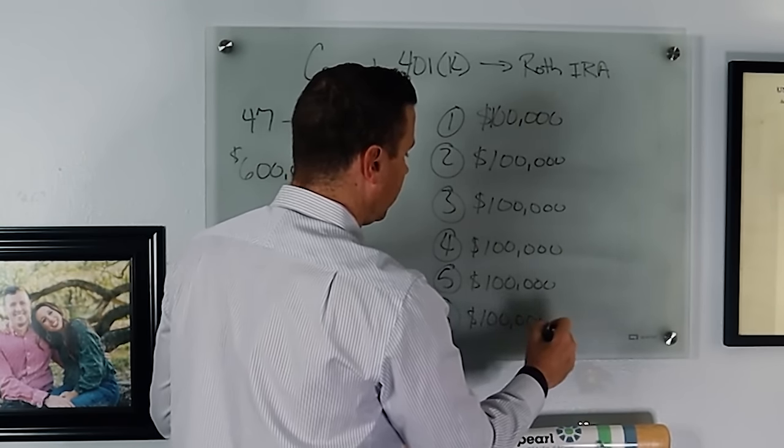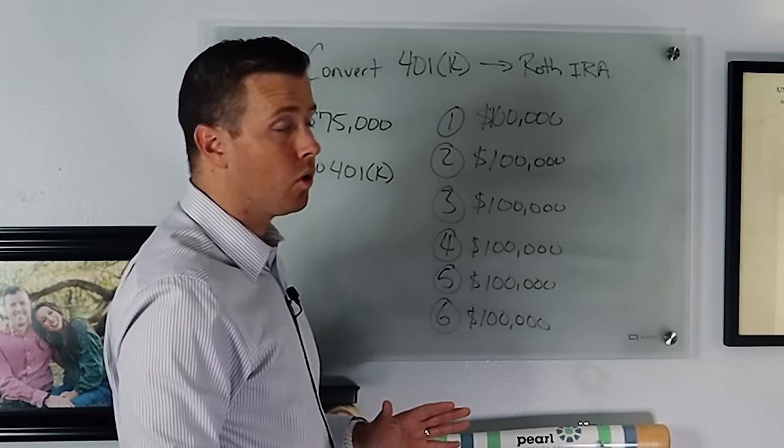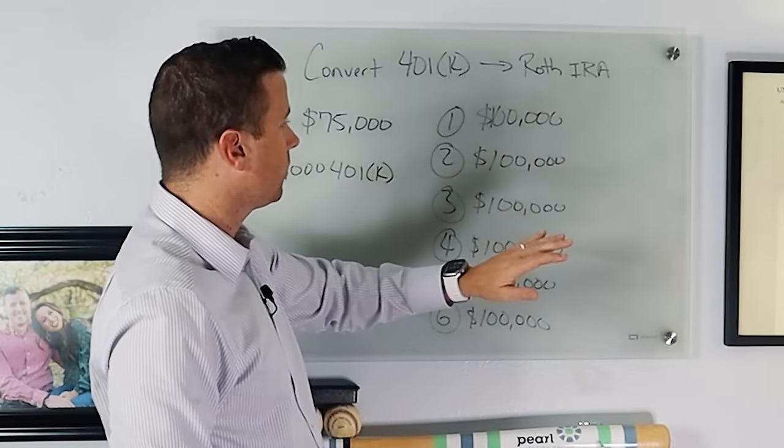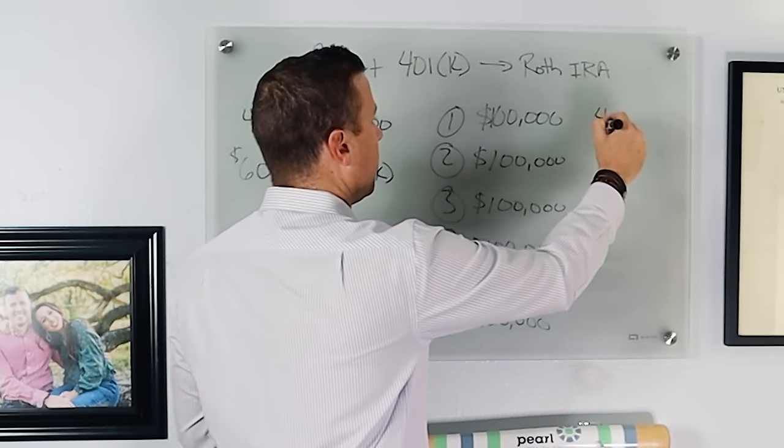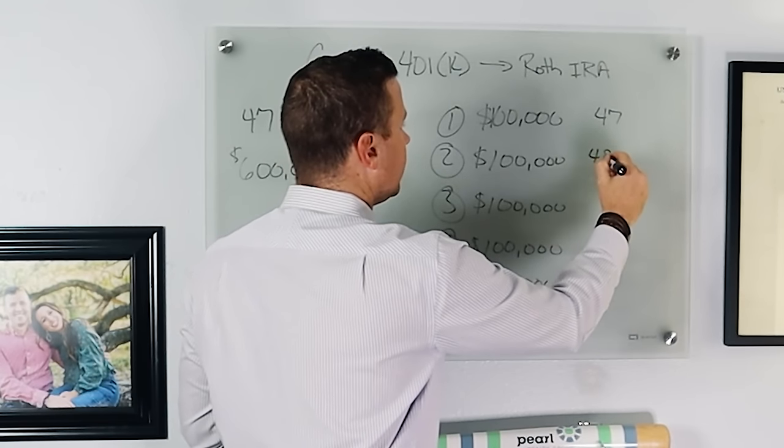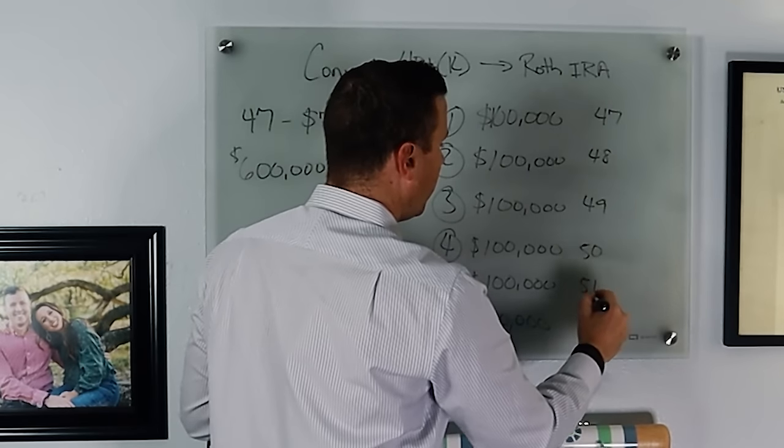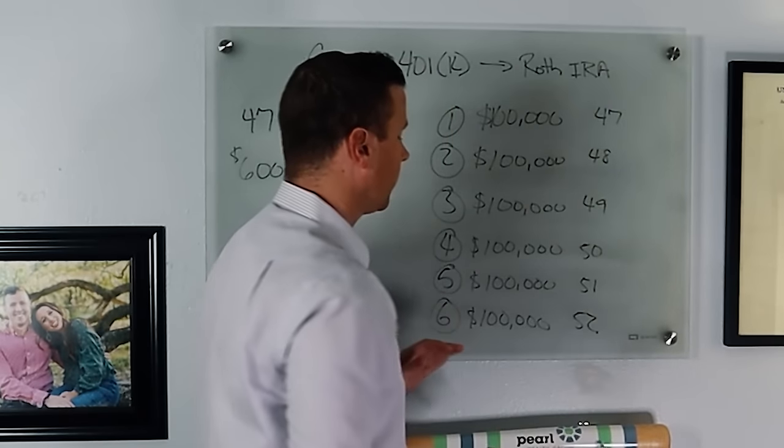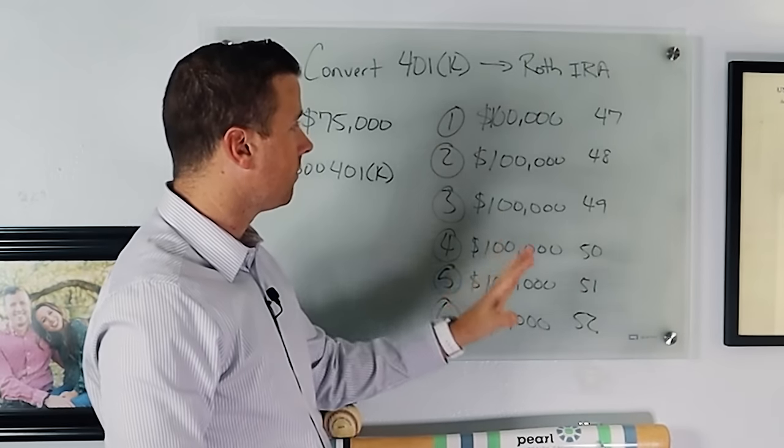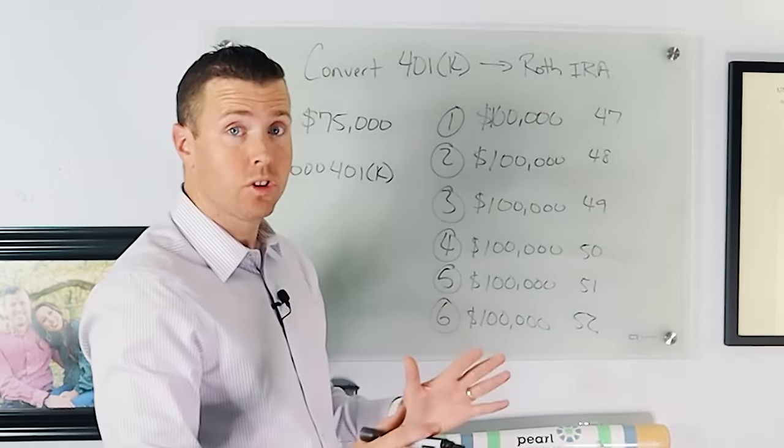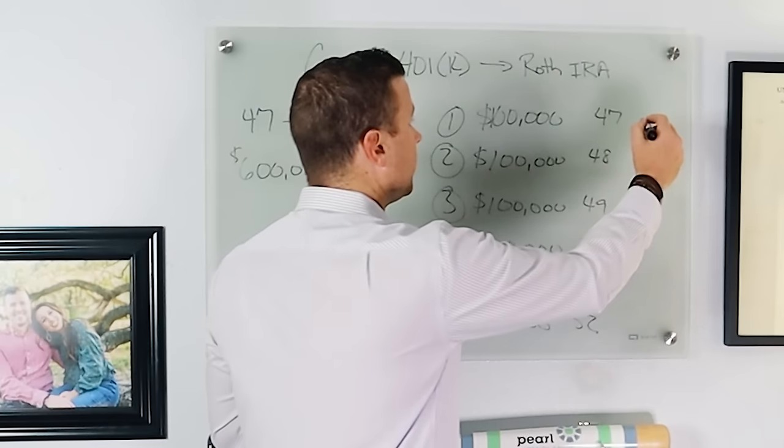Now, if we're 47 years old, that means we started at 47. So 47, 48, 49, 50, 51, and 52. Those are the ages that we're doing the conversions. Now let's just assume it's this year. So 2023.